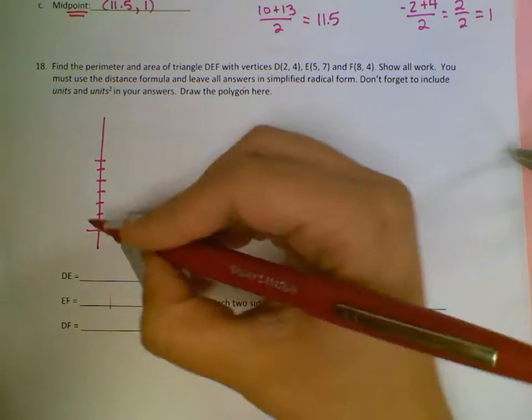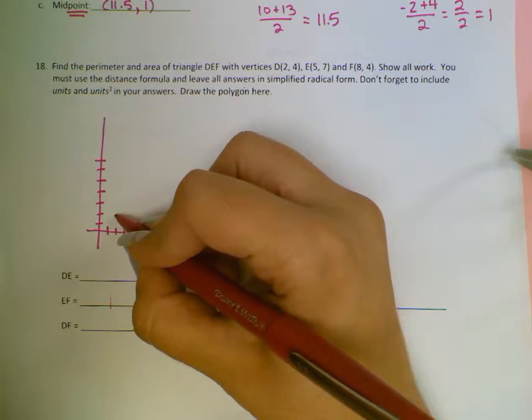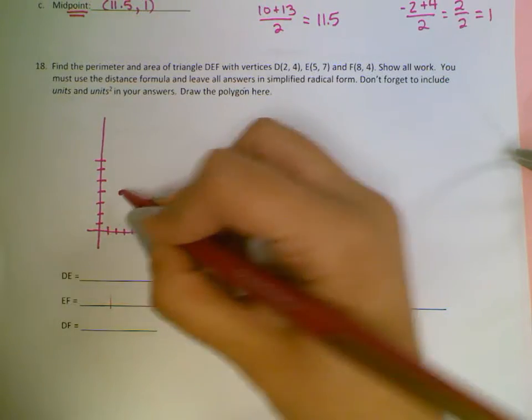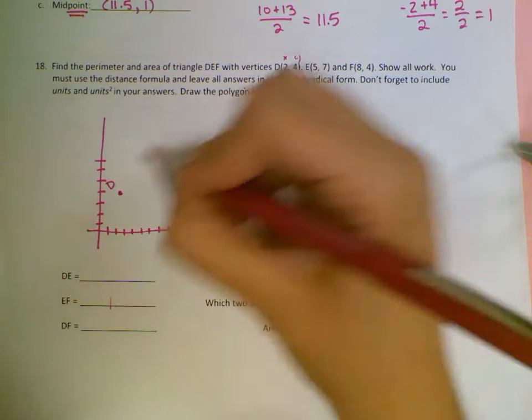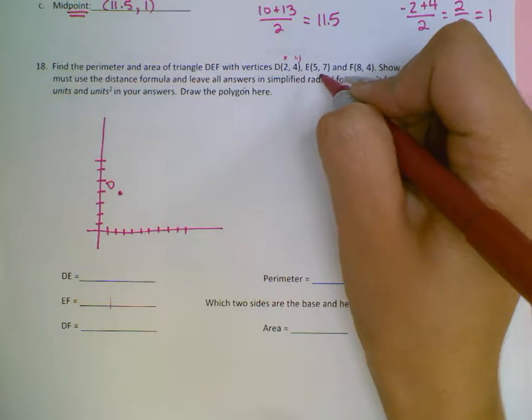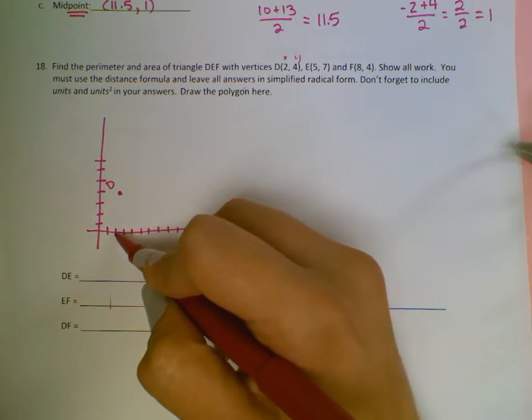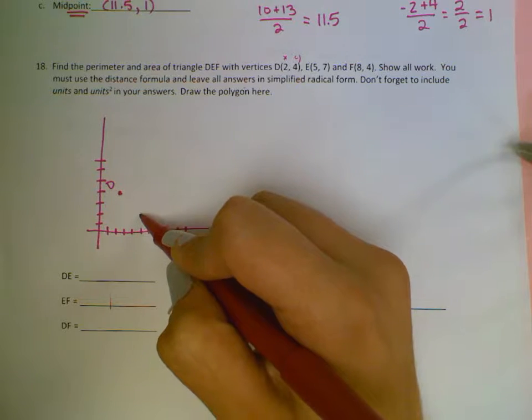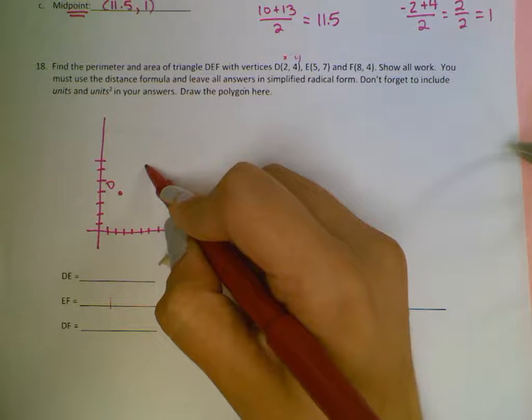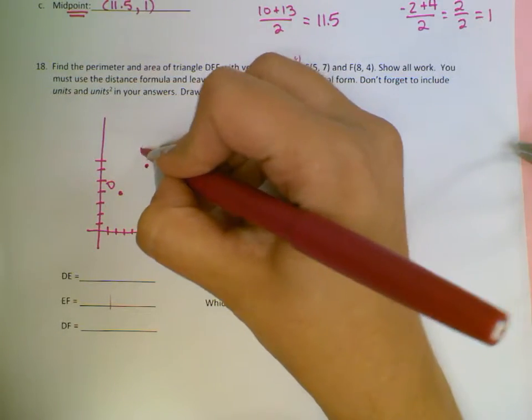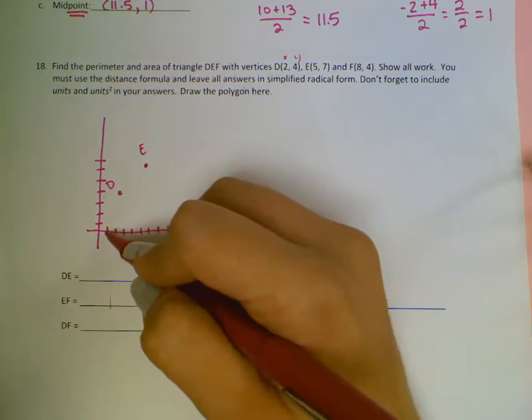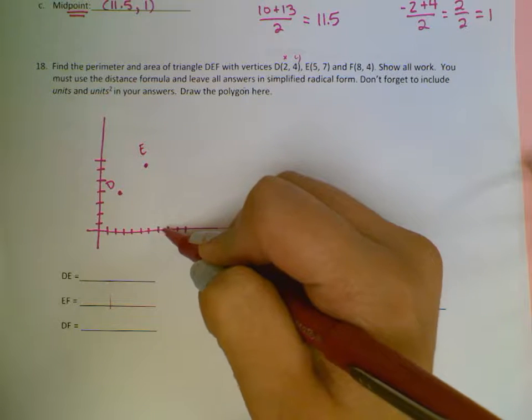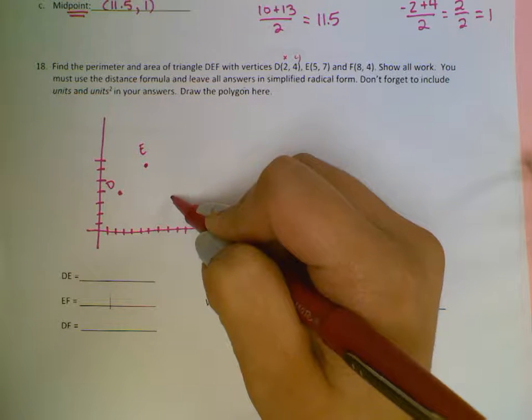D will be at 2, 4, which is 2 over and 4 up. This being my X, this being my Y, and this is D. E is at 5, 7. So I count over to 5, and up to 7. And F is at 8, 4, so over 8 and up 4.